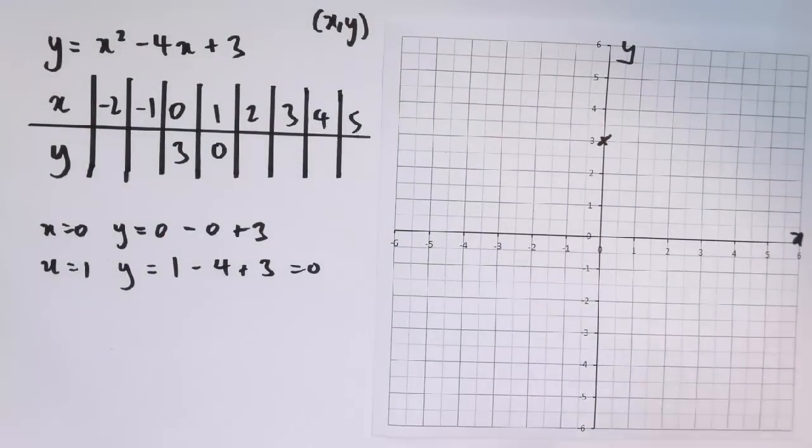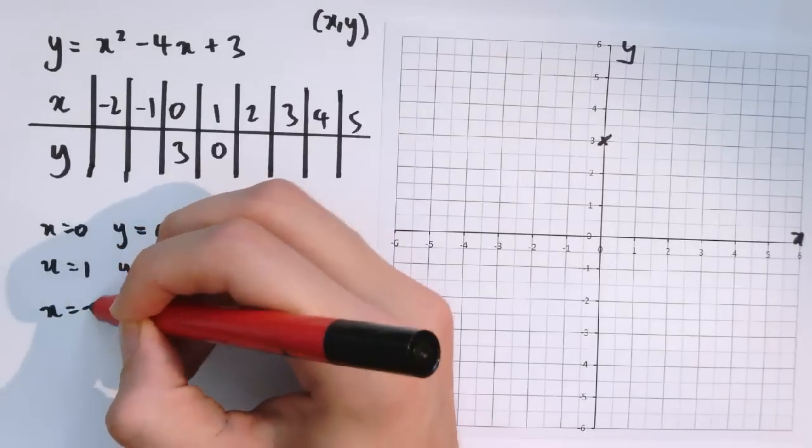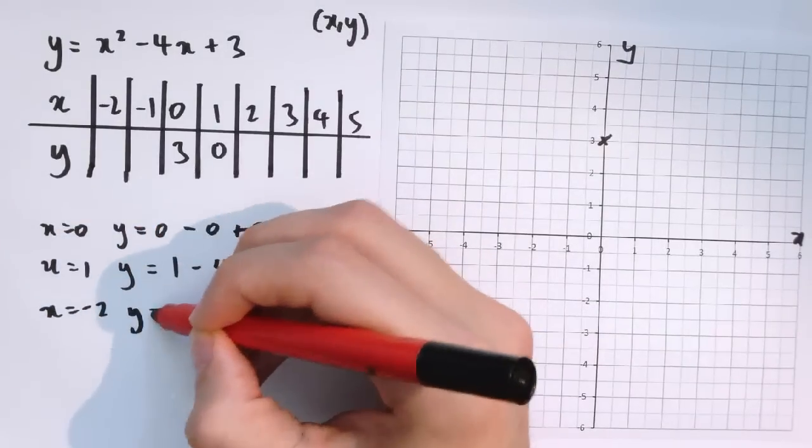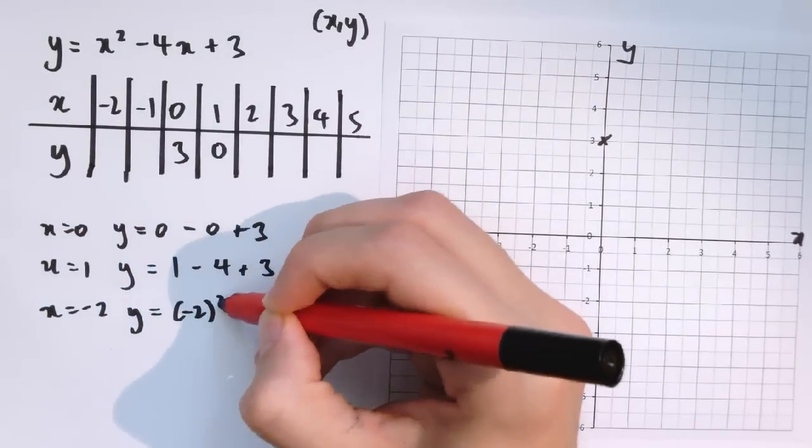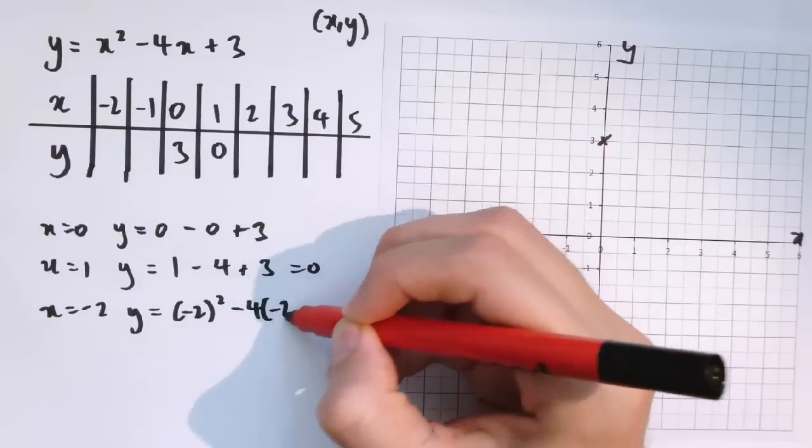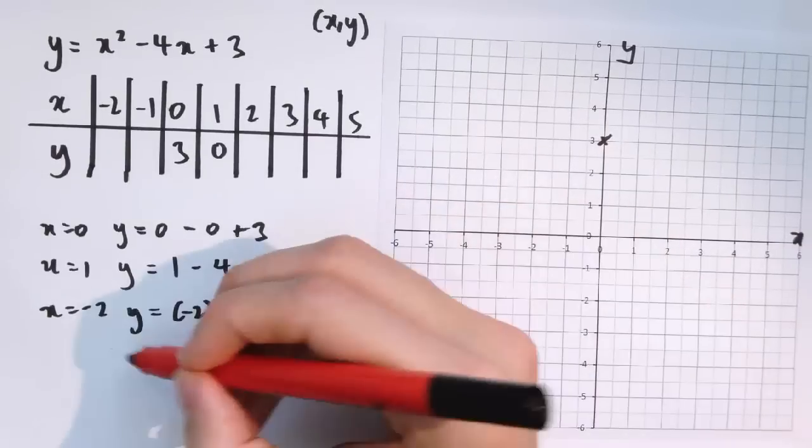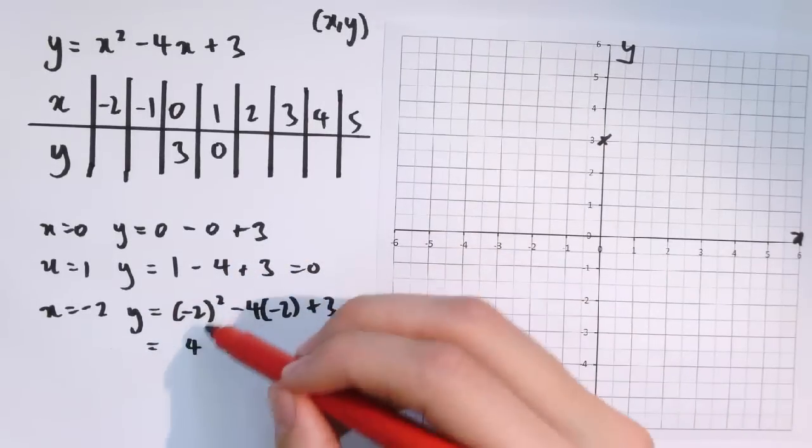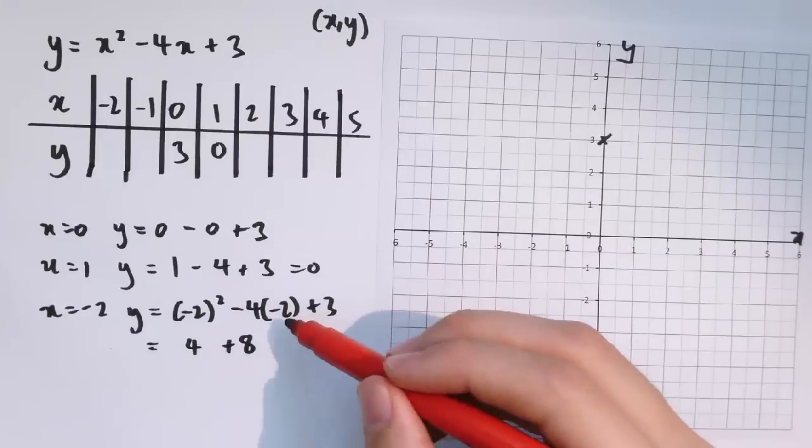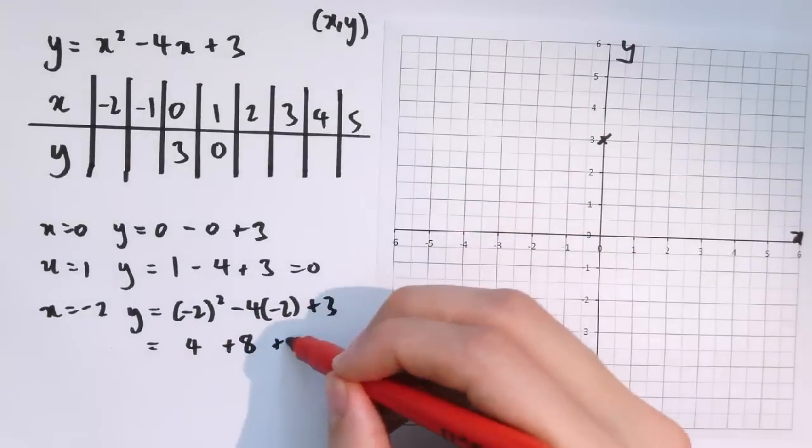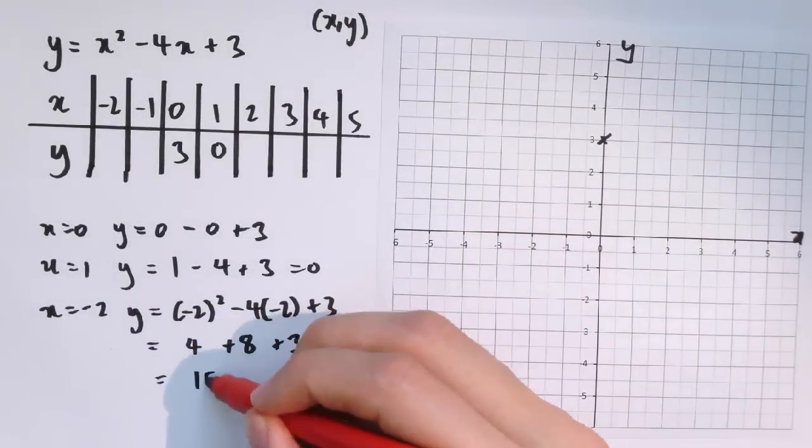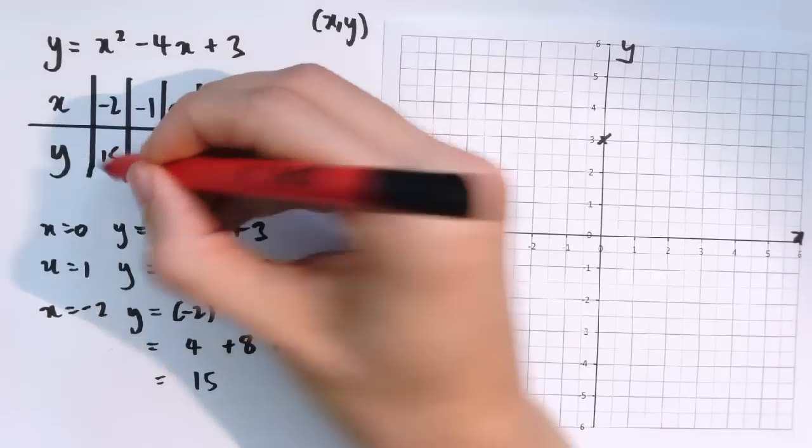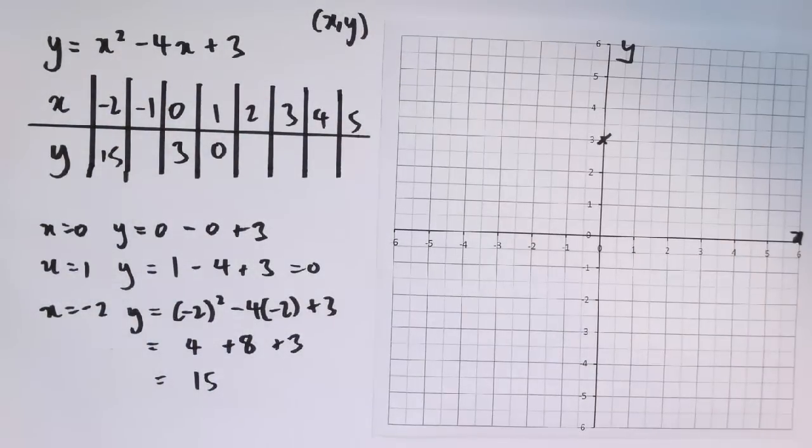Be a bit careful when you're substituting in negative values, because if I do x equals minus 2, I need y equals x squared, that's minus 2 squared, minus 4 times minus 2, plus 3, which gives 4, plus 8, because minus 2 squared is plus 4, minus 4 times minus 2 is plus 8, plus 3. So that gives me 15. Actually, that's gone off the scale of this graph, so I can't plot it on here.